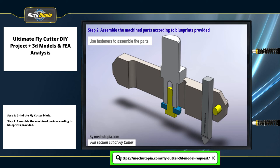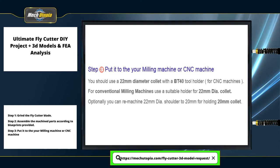Step 3: mount the fly cutter in your milling machine or CNC machine. You should use a 22 mm diameter collet with a BT-40 tool holder for conventional milling machines. Use a suitable holder for a 22 mm diameter collet. Optionally, you can re-machine the 22 mm diameter shoulder down to 20 mm to use a 20 mm collet.